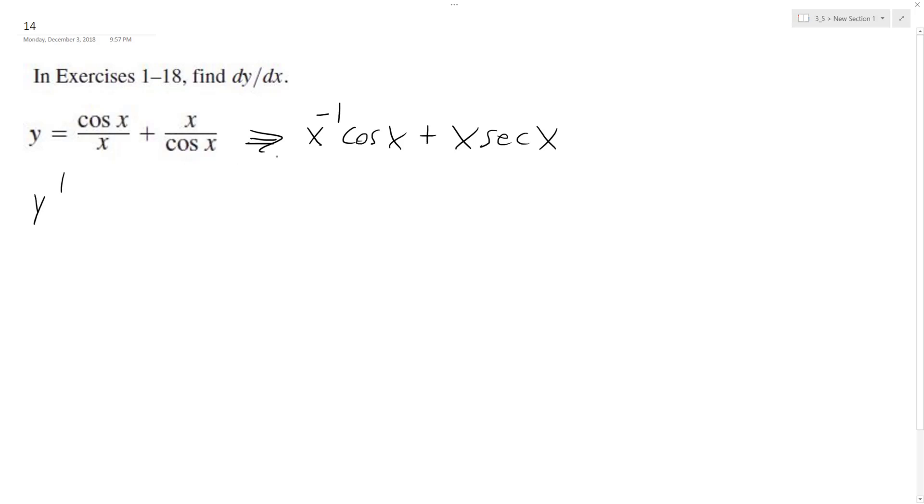So finding the derivative, starting off with the first portion here, the product rule is going to be derivative of x raised to the negative 1 is negative 1, well, negative x raised to the negative 2 times the cosine of x plus,